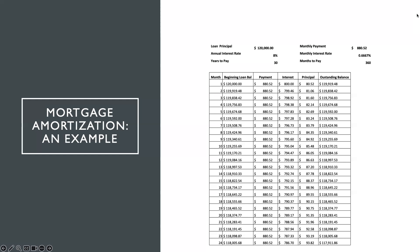The excess of the interest allocation — which is $80.52 — would be deducted against the principal loan balance. Thus, we get an outstanding balance at the end of month one of $119,919.48. The outstanding balance at the end of month one then becomes the beginning loan balance for month two.